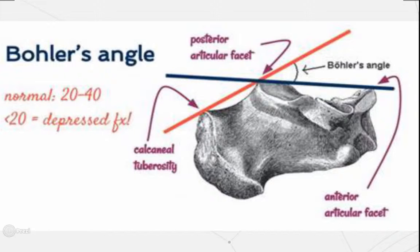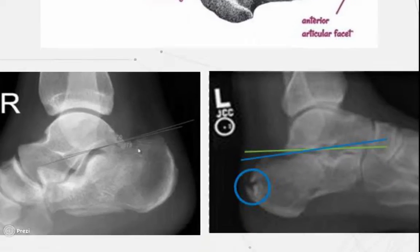Fractures of the calcaneus itself can be seen on the x-ray as well. Upward displacement of the body of the calcaneus produces the sign of a depressed fracture as indicated on the x-rays.